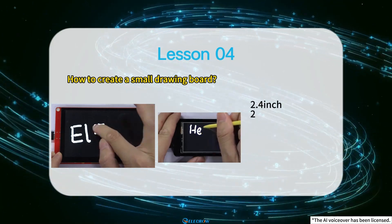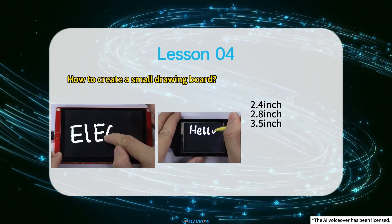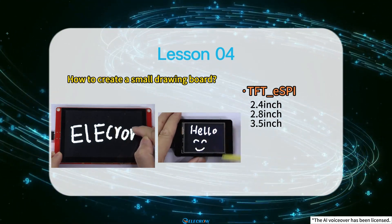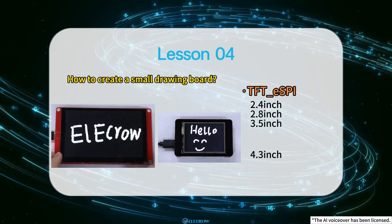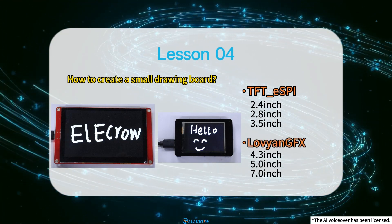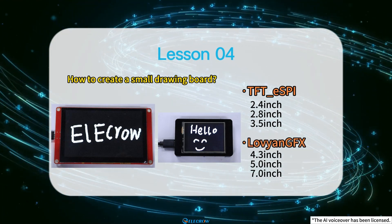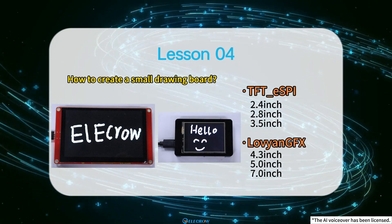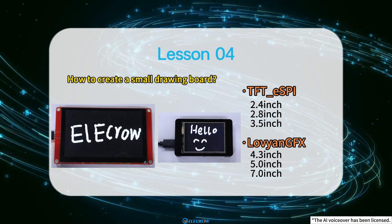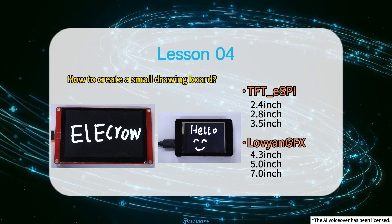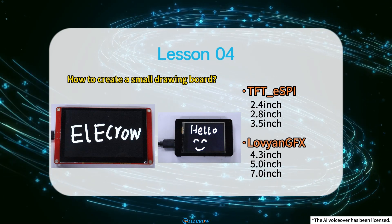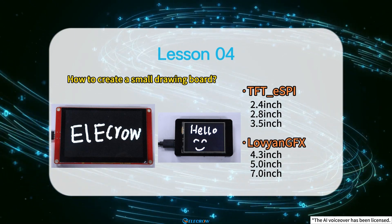Since the 2.4-inch, 2.8-inch, and 3.5-inch boards use the TFT_eSPI library, while the 4.3-inch, 5-inch, and 7-inch boards utilize the LovyanGFX library, this lesson will be divided into two parts. The first half will demonstrate how to create a small drawing board using a 5-inch board, and the second half will use a 2.4-inch board for the demonstration. You can choose which part to watch based on the board you are using.